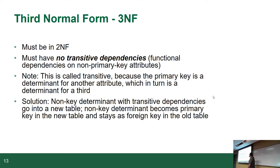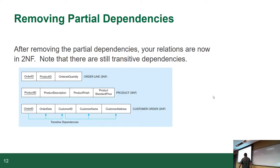It's called a transitive dependency because the primary key is a determinant of another attribute, which in turn is a determinant for another attribute. Order ID determines the date and the customer ID; customer ID determines the name and the address. Thus the order ID determines customer ID — that's the first level — which defines name and address, which is a third level. You can't have three levels in one table.